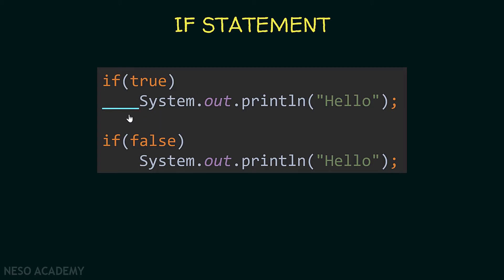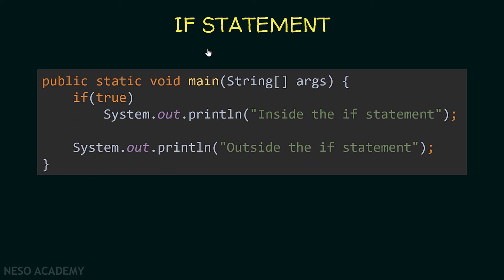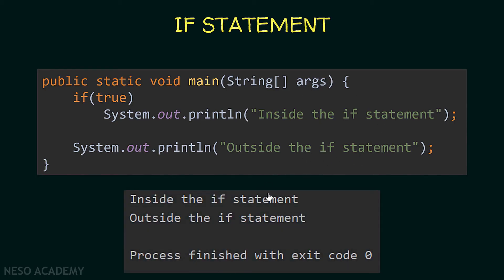Note that I'm leaving indentation to indicate that a statement is inside the if statement. Suppose we have this code: if true, then we print inside the if statement, and after that there is a statement outside the if statement. If we run this program, both strings will be printed — the one inside the if statement because the condition is true, and the one outside. Have a look at the indentation: the if statement and the outer statement are on the same level, and the inner statement is inside the if statement.